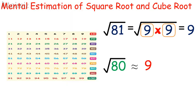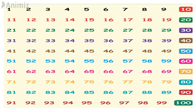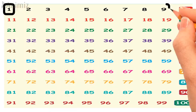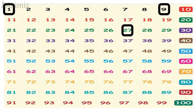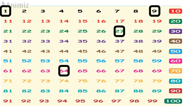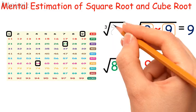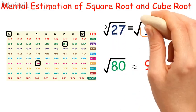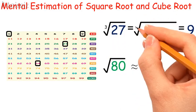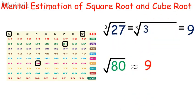Same as cube root. There are only four perfect cubes between 1 and 100: 1, 8, 27, and 64. It's easy to find the cube root of any perfect cube. For example, the cube root of 27 equals 3.